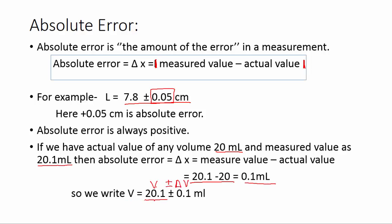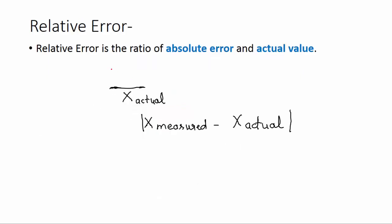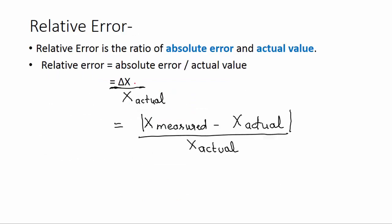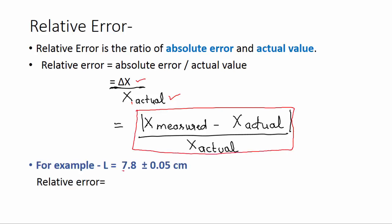What is relative error? Relative error is the ratio of absolute error and actual value: relative error = ΔX / X_actual. You know absolute error equals measured value minus actual value, so we can plug in here and get the final equation: |X_measured - X_actual| / X_actual.